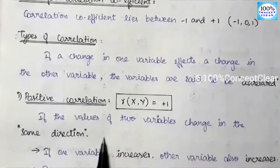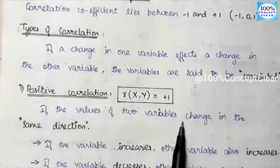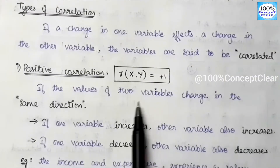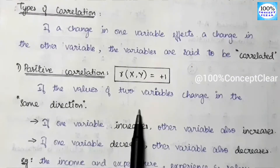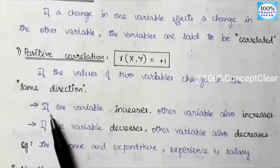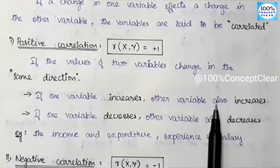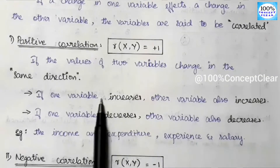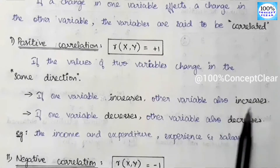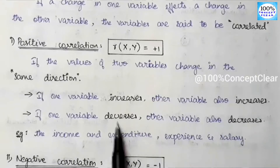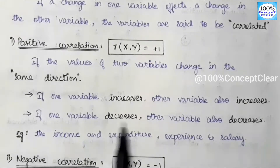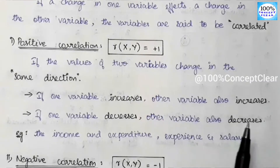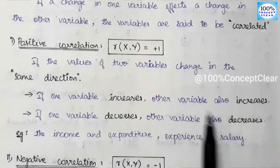If the value of two variables changes in the same direction, that is the condition for positive correlation. If one variable increases, the other variable also increases. If one variable decreases, the other variable also decreases. So the two variables move in the same direction — increase and increase, or decrease and decrease.